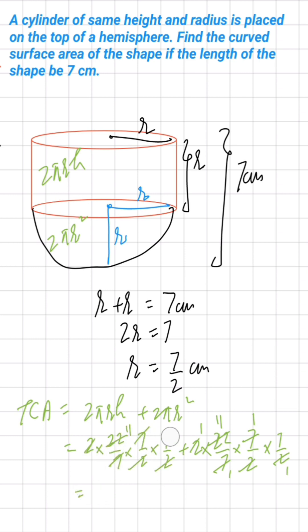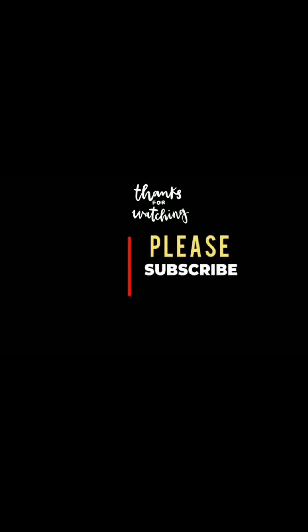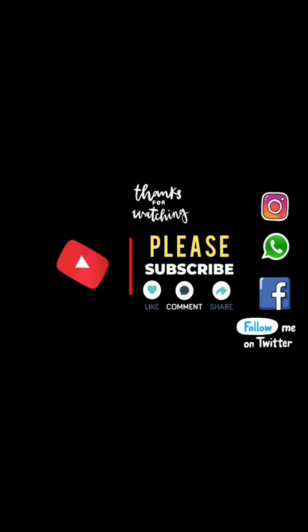11 × 7 = 77, plus 11 × 7 = 77, so the total curved surface area is 154 square centimeters. If there is any confusion, please write in the comment section. Thank you.